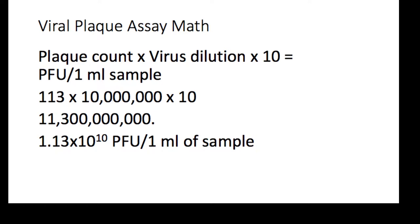The first thing you want to do is figure out what plate you're actually going to use. You want to find the plate that has between 30 and 300 plaques. You're not looking for colonies, you're actually looking for plaques or areas of clearing on the plate.